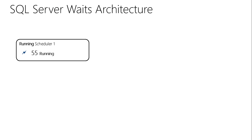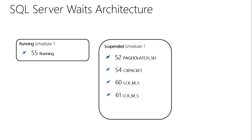When we talk about threads, for the purposes of understanding waits, we'll talk about threads being in one of three states. The first is a running state. In this example, we have a thread running under the context of session ID 55 on Scheduler 1. On Scheduler 1, assigned to a processor, we can only have one thing running at once — only one thread in a status of running.